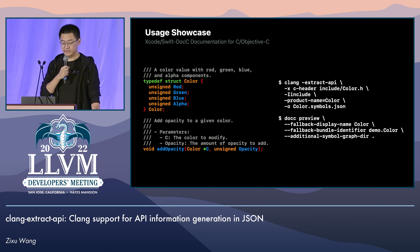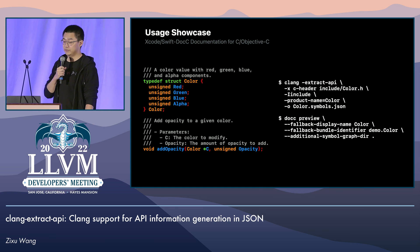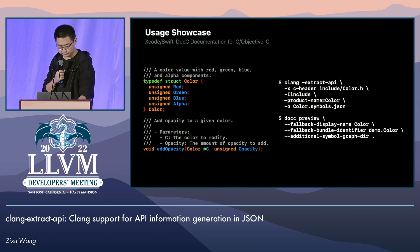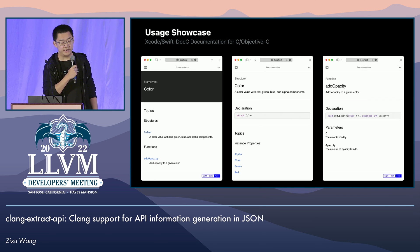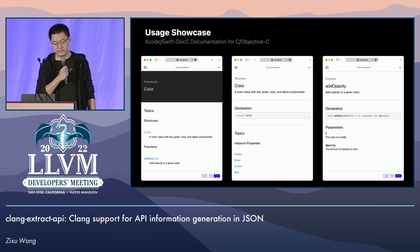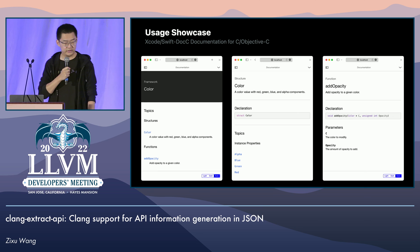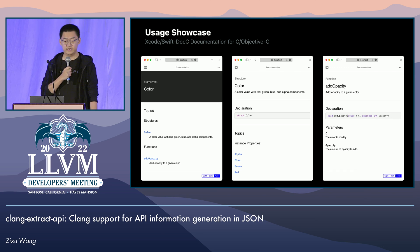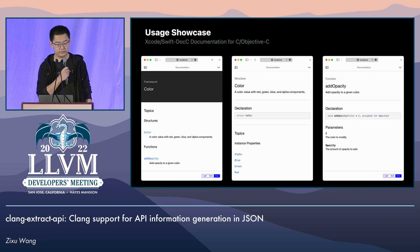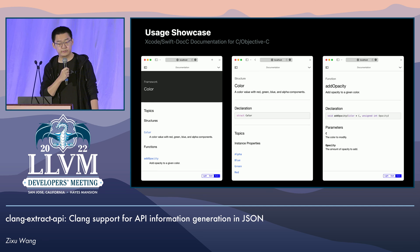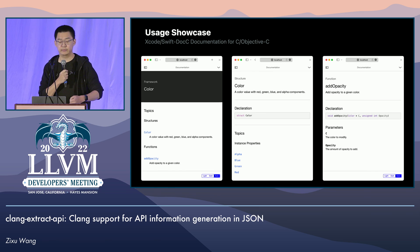As a demonstration, here's my simple color library again. And with this command line, clang-extract-API extracts API information from the header, and the output is passed to DocC to generate a documentation preview for my library. Here are some of the rendered pages from this demonstration. You can see the Color struct with its members and description, and the addOpacity function with the function signature declaration snippet and also parameters documentation from the inline comments.